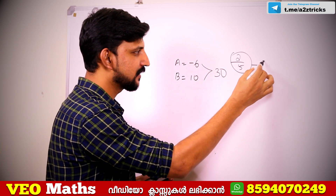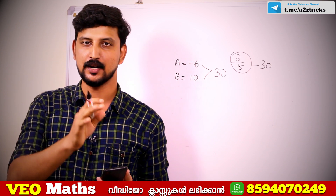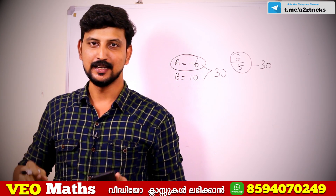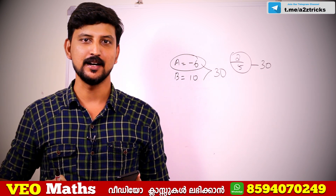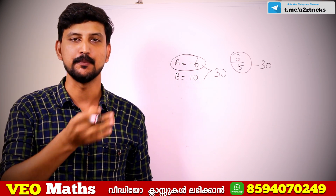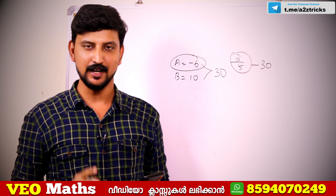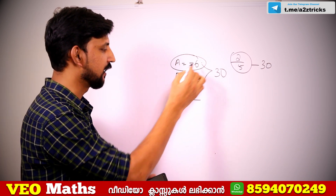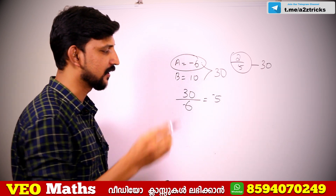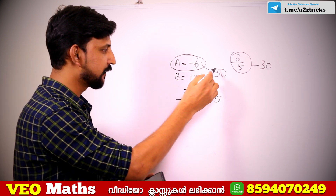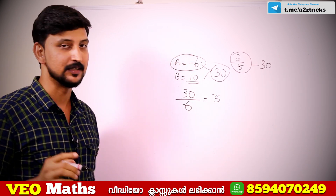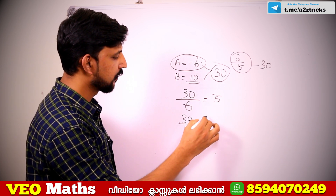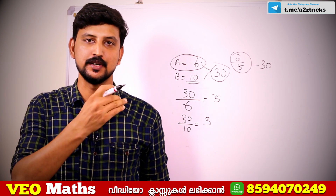The total tank capacity — we can see that this is 30 units, using LCM of 6 and 10. Every tank: pipe A takes 6 minutes, pipe B takes 10 minutes. The efficiency of pipe A is 5 units per minute, and pipe B is 3 units per minute. Pipe A is emptying, so it is minus 5 units.